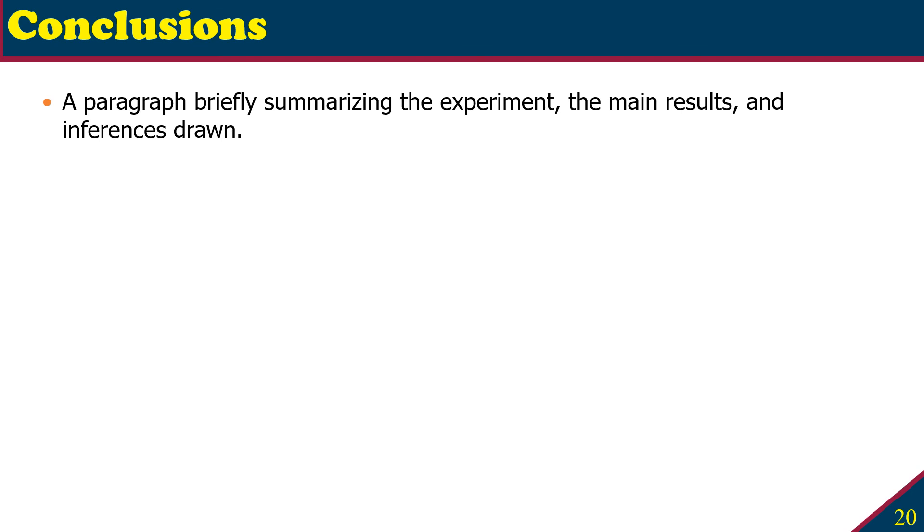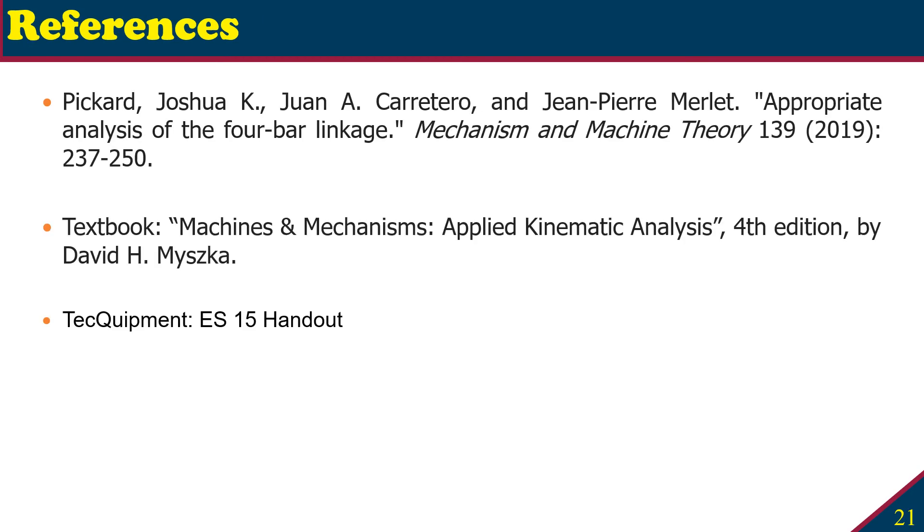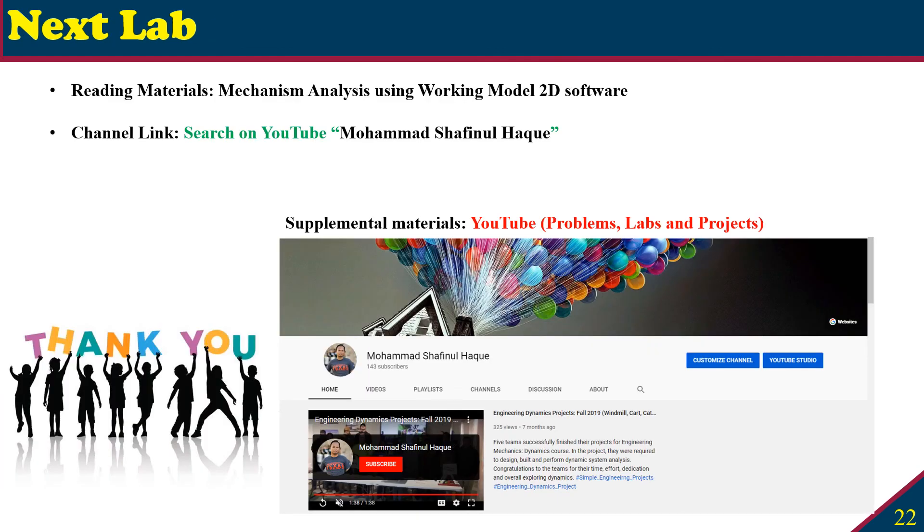The conclusion section is the same as usual. You have to write a paragraph summarizing the experiment that you have performed, the key takeaway results, and any inference that you have drawn from the experiment. The references used for this lab were your textbook, also a paper from the internet on appropriate analysis of the four bar linkage, and the handout and equipment from tech equipment ES-15. That is all for our first lab on four bar mechanism. Our next lab is mechanism analysis using Working Model 2D software. See you guys in the next lab.